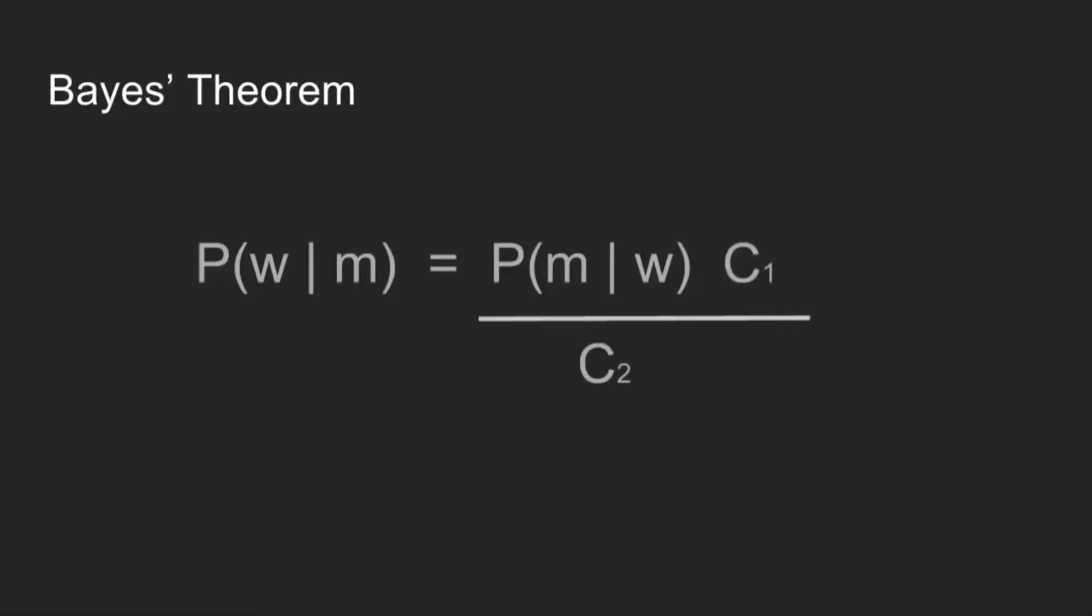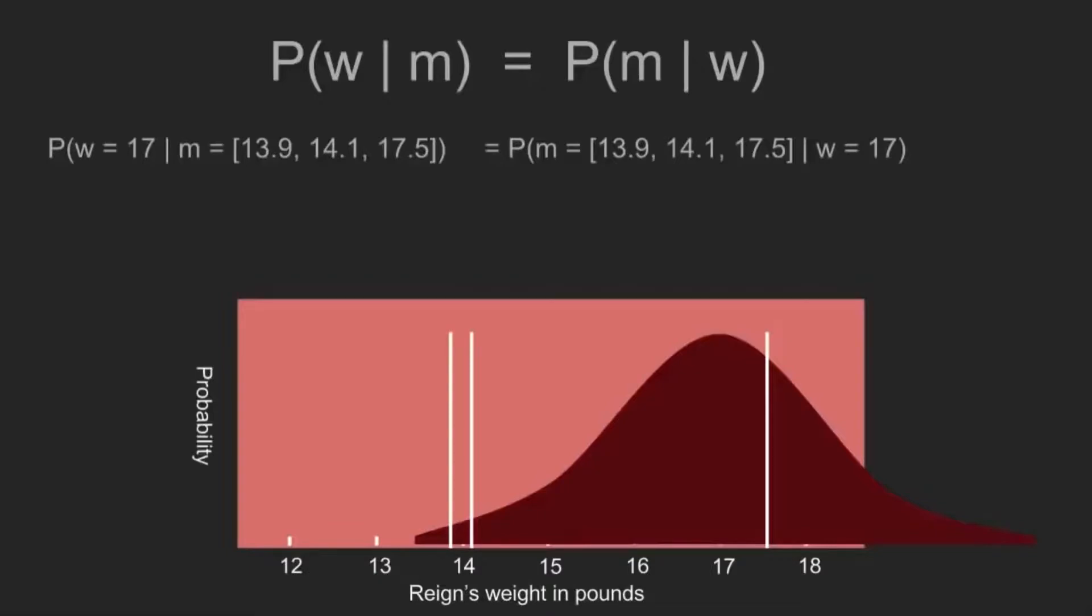So now our formula looks like this. We can further simplify it. And so we want to calculate this. We want to calculate the probability of our measurements occurring given a weight. And we want to do this for all of the possible weights. And then we'll end up with a new distribution, which is our belief. What's the probability of each of those weights occurring given the measurements? So these two things are identical.